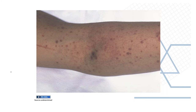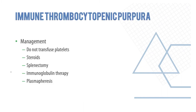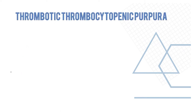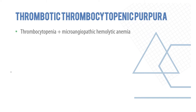Management of ITP: do not transfuse platelets. Steroids are required; some patients may need splenectomy. Immunoglobulin therapy is quite useful, and some patients who are not recovering may need plasmapheresis. These are the major features of immune thrombocytopenic purpura that you should be aware of.